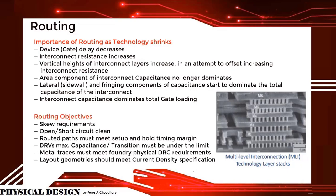Routing objectives include: SKU requirements, open and short circuit clean, routed paths must meet setup and hold timing margin, DRVs — max capacitance and transition must be under the limit, metal traces must meet foundry physical DRC requirements, and layout geometries should meet current density specifications.